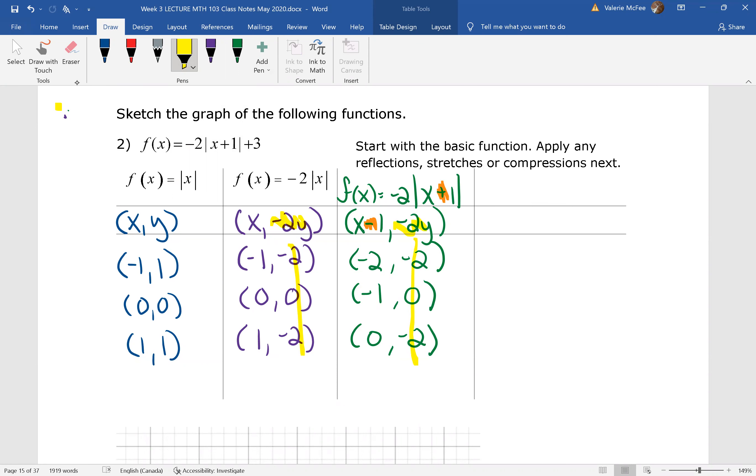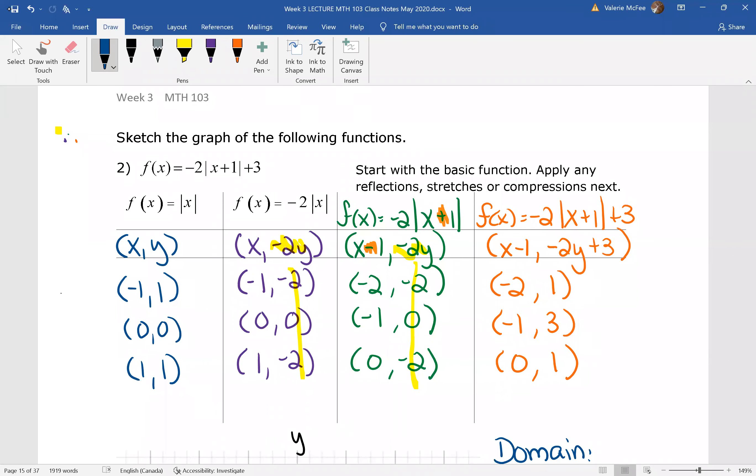Find the final set of ordered pairs and graph the function. So for the final plus 3, I hope you knew you had to add 3 to your y coordinates so you had negative 2y plus 3 in the end, and you should have known what this graph would look like. If we look at what we have here in our equation.